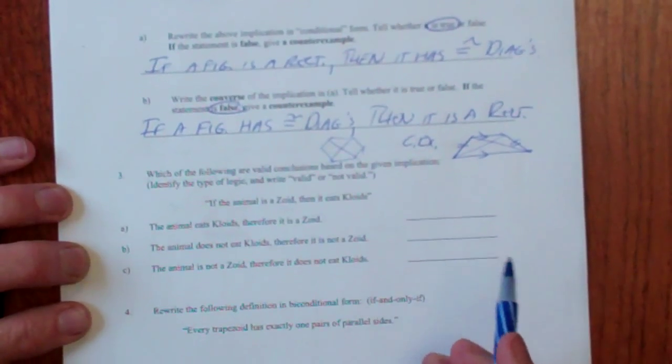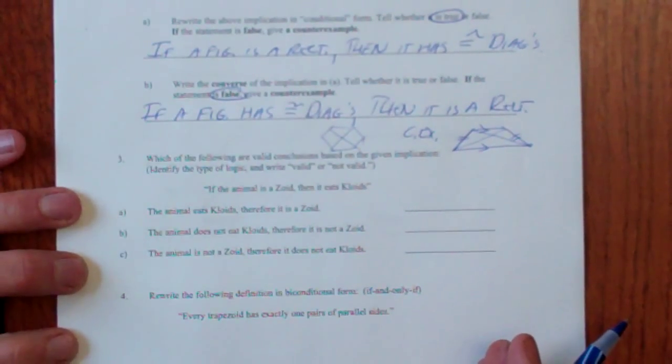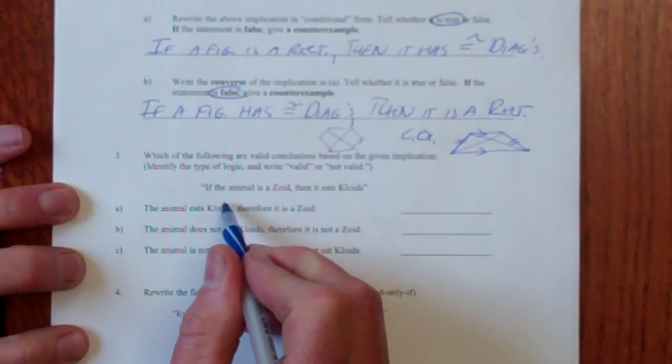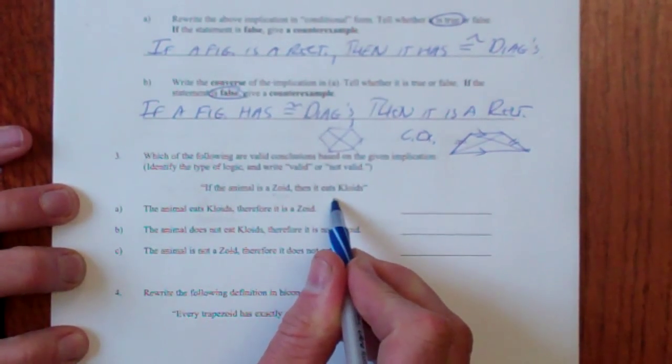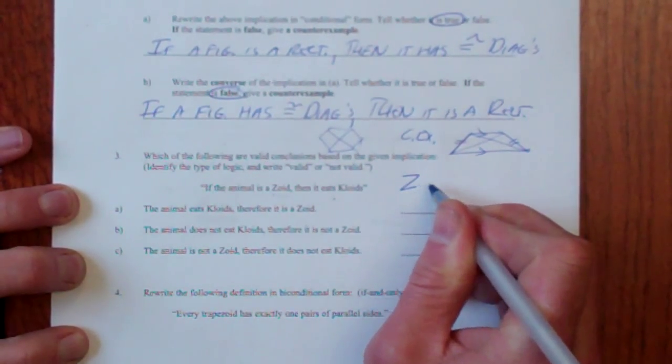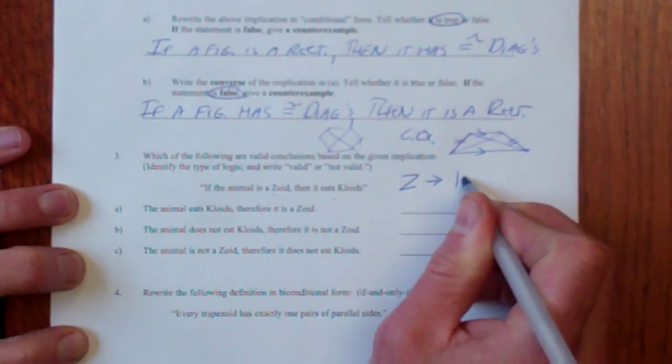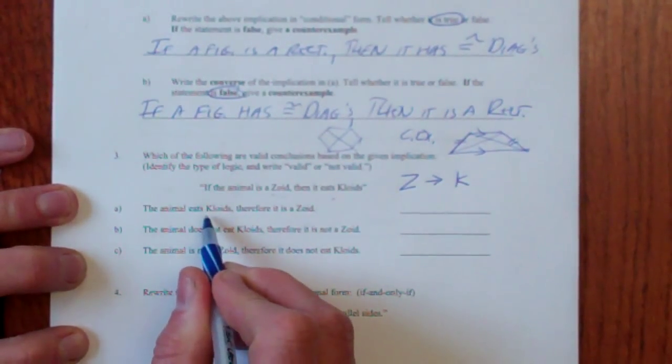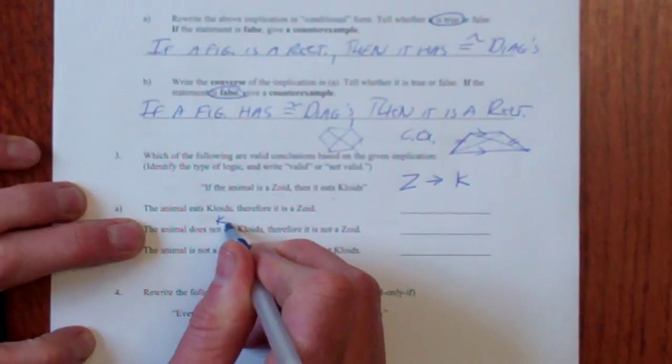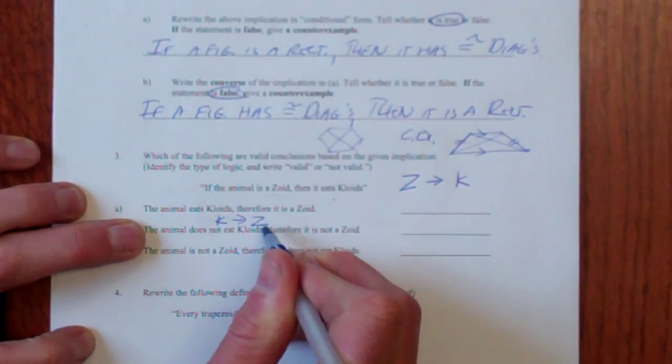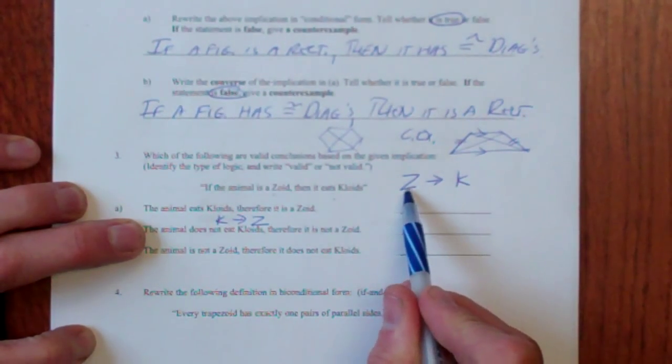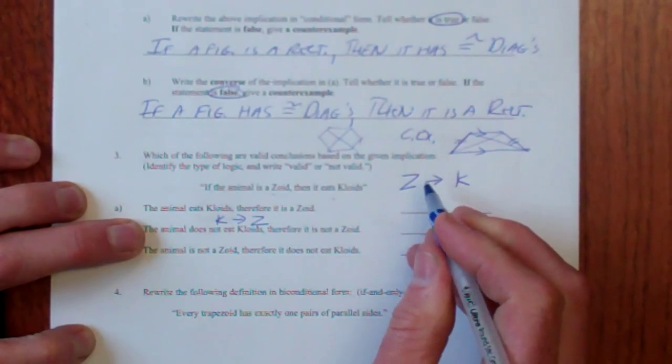Alright, which of the following are valid conclusions based on the given implications? If the animal is a zoid, then it eats cloids. Z means it's got to eat K. So, if the animal eats cloids, therefore it is a zoid. That is just swapping that. That's the converse. And that is not valid.